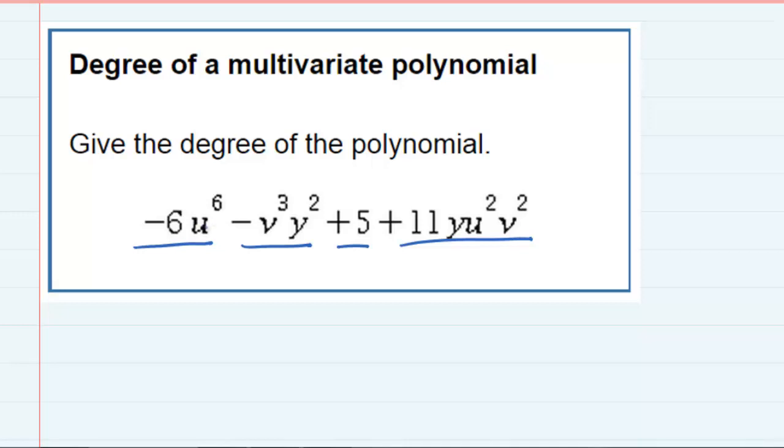So for example, the first term here only has one variable, u, and it's being raised to the sixth, so its degree is six.